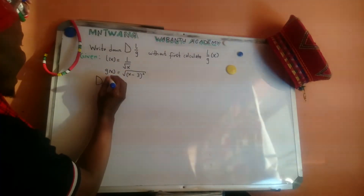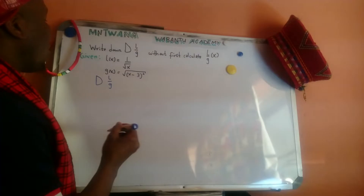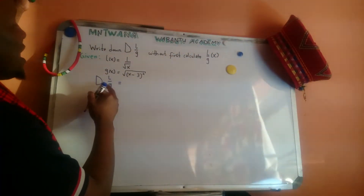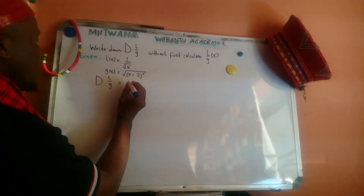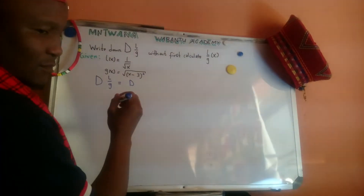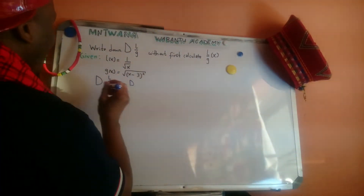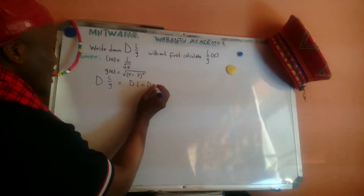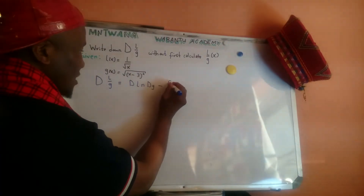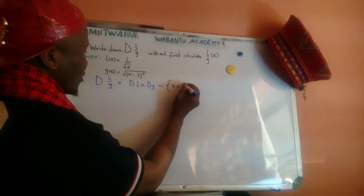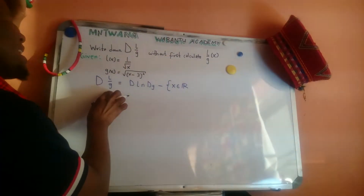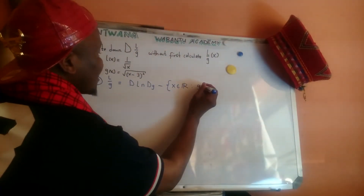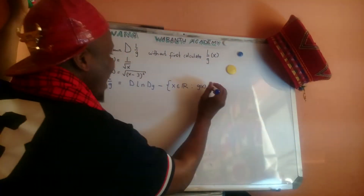So if somebody gives you the domain of l over g, here is what that means. The solution is: domain of l intersected with domain of g, and then minus the set of x in the real numbers where the denominator function equals zero.